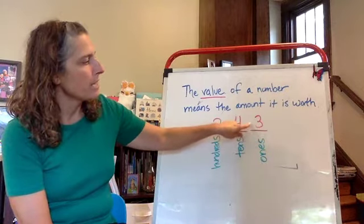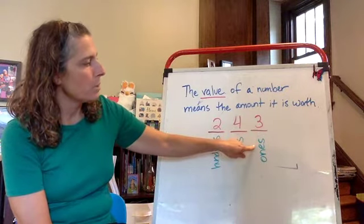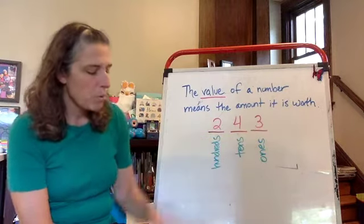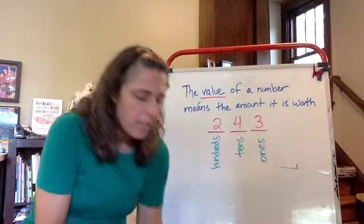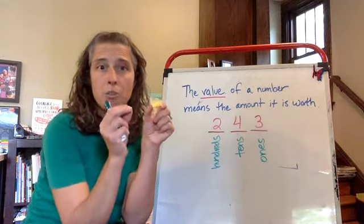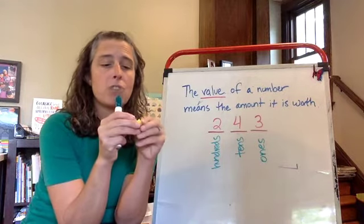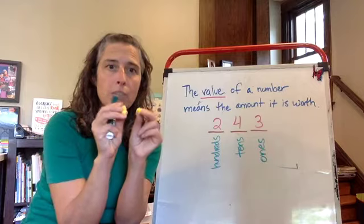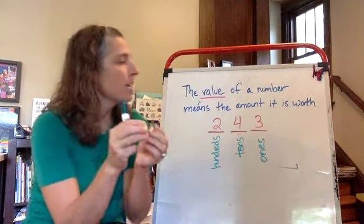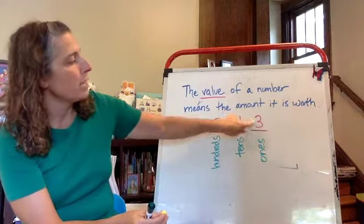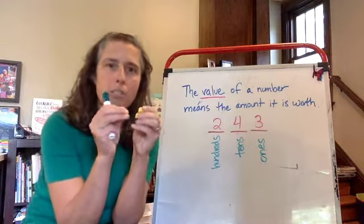Right here I said there's a three in the ones place. Now three ones, if we wanted to represent or show three ones, it would look like with unifix cubes—these are usually the math manipulatives that you use in school—it would look like three of these little small squares. So the value of the three in the ones place is just these three ones.